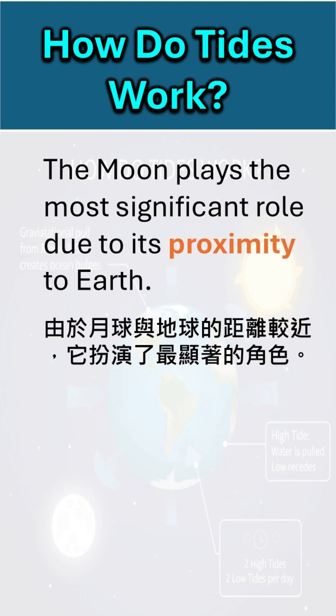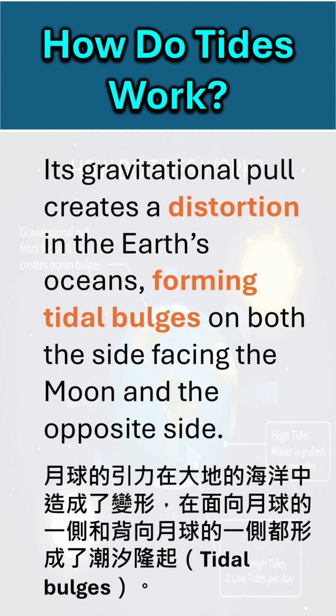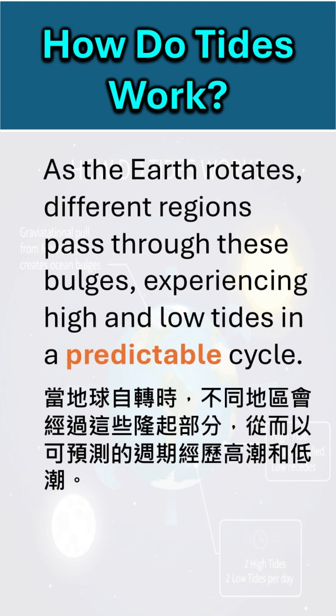The Moon plays the most significant role due to its proximity to Earth. Its gravitational pull creates a distortion in the Earth's oceans, forming tidal bulges on both the side facing the Moon and the opposite side. As the Earth rotates, different regions pass through these bulges, experiencing high and low tides in a predictable cycle.